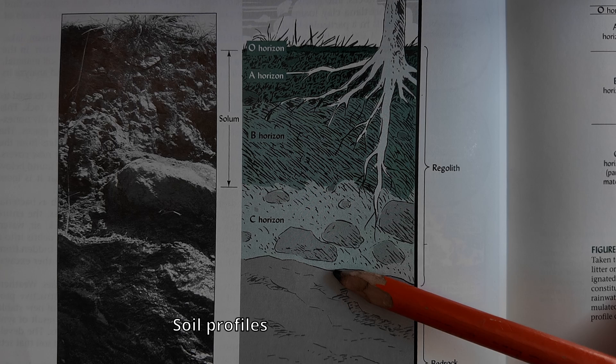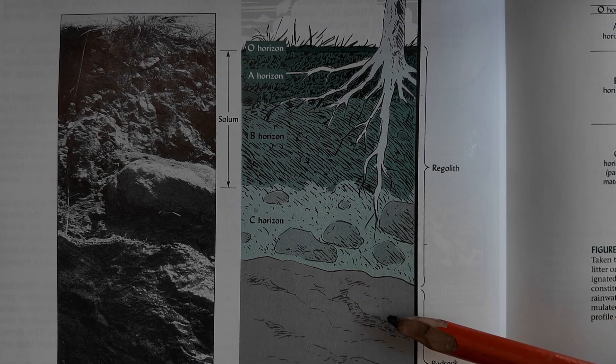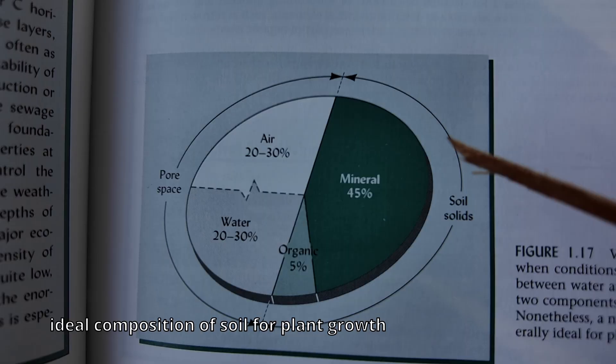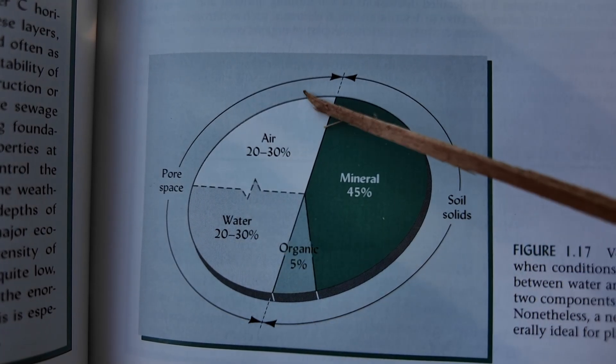the texture, the soil structure, the bulk density, how much organic matter is contained within this soil, and something like soil profiles. And there are other qualities as well that are not listed in the book.